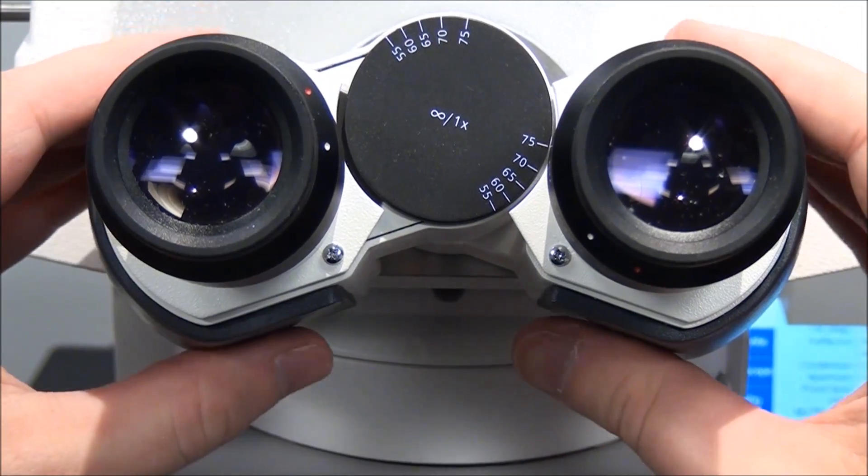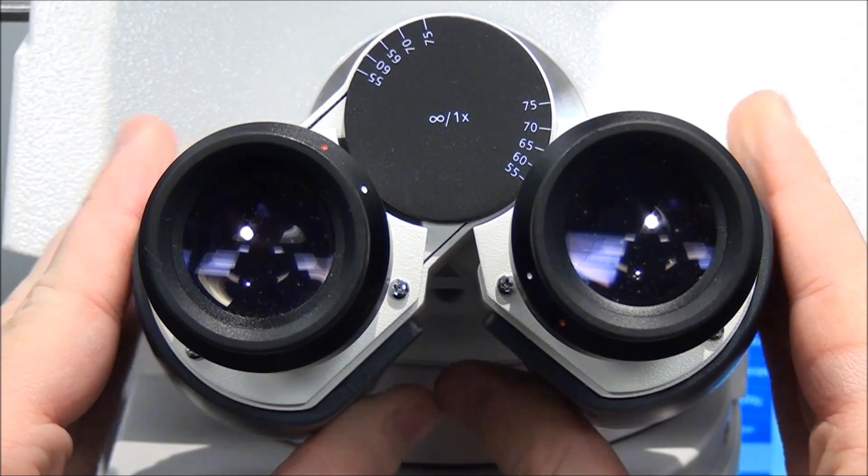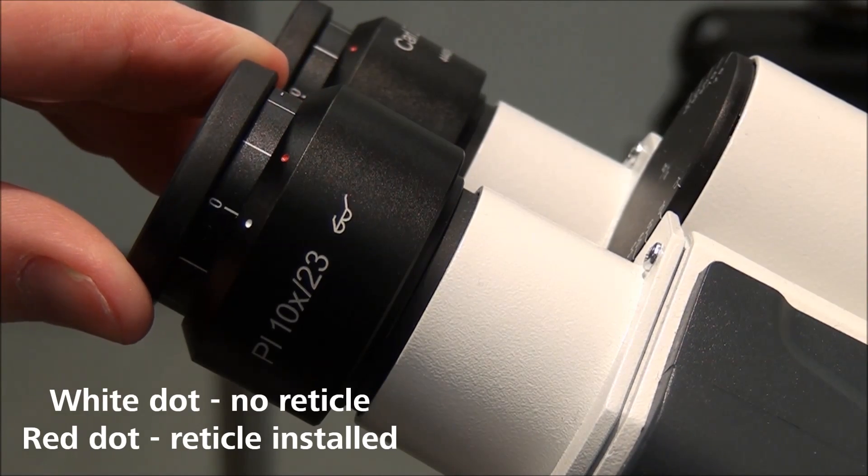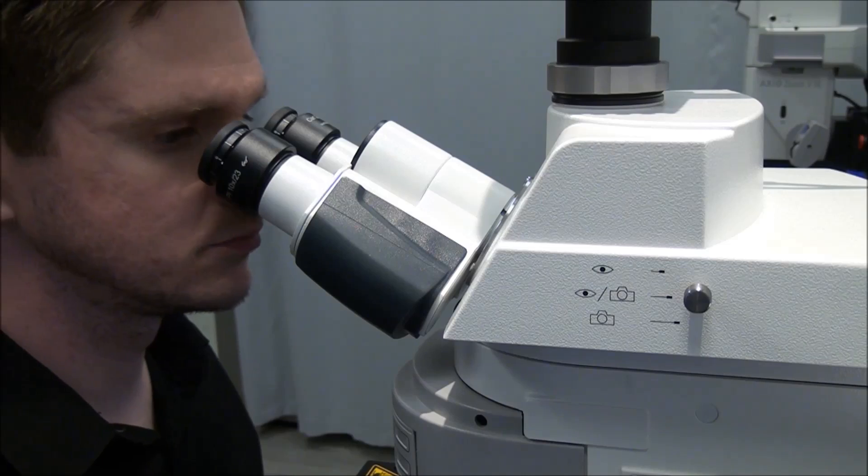Step 3: Set the correct interpupillary distance for your eyes and adjust the diopter setting appropriately. Use the red dot if a reticle is used. You should be able to comfortably view the sample with both eyes.